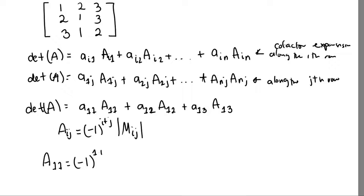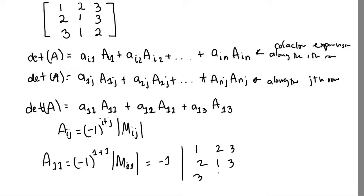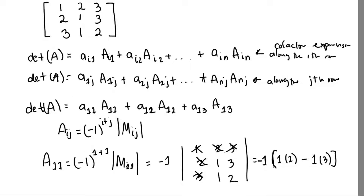To get A_11: it's (−1)^(1+1) times the determinant of minor M_11, obtained by removing the first row and first column from the matrix [1,2,3; 2,1,3; 3,1,2]. The remaining 2×2 minor gives det = 1×2 − 1×3 = −1. With (−1)^2 = 1, A_11 = 1.